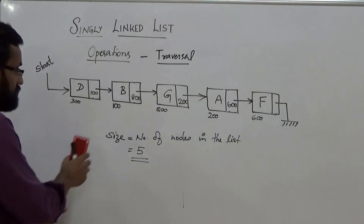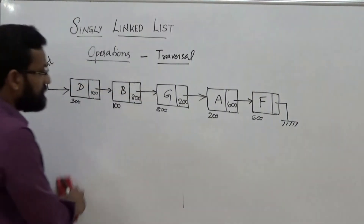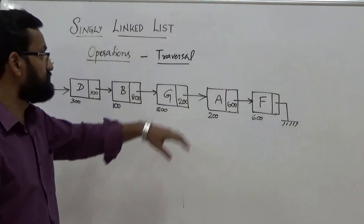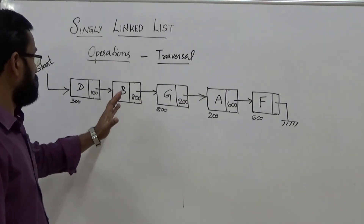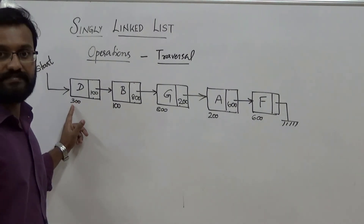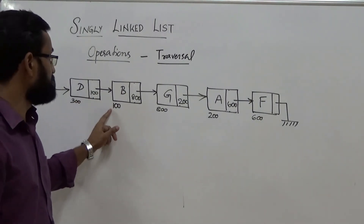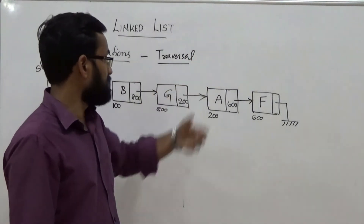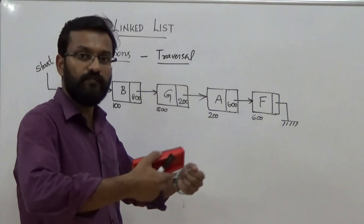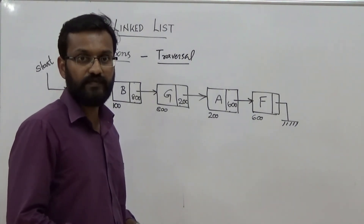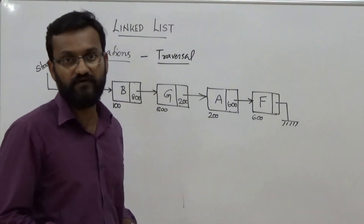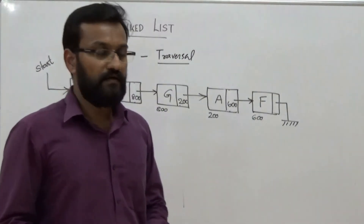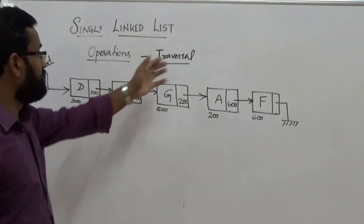One more point: from this structure it is clear that nodes need not be contiguous. If you consider the first node, its base address is 300; the second node's base address is 100; and the third node's location is 800. So nodes need not be in a contiguous fashion — that is one difference of a singly linked list compared with an array structure. Each element lies in a different memory location.